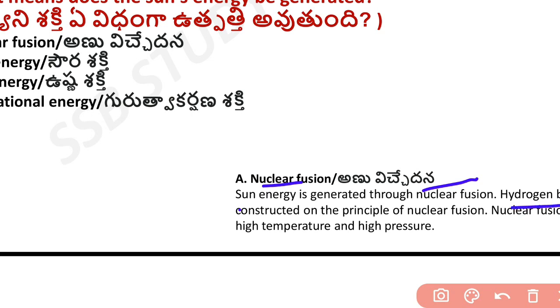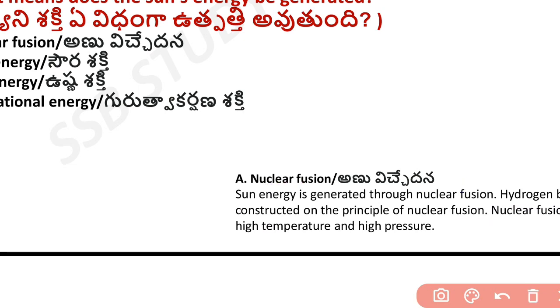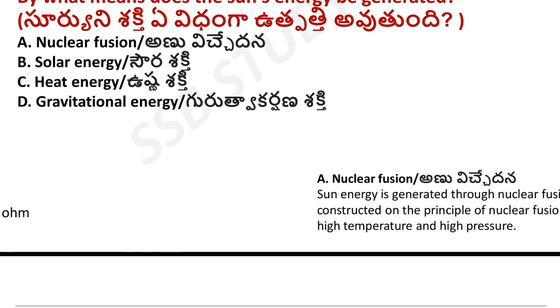Hydrogen bombs are constructed on the principle of nuclear fusion. Fusion is the most dangerous reaction. It is very difficult to control, unlike fission.